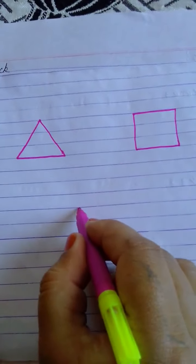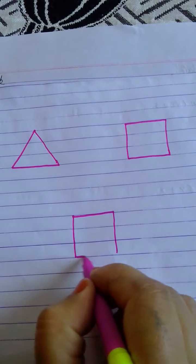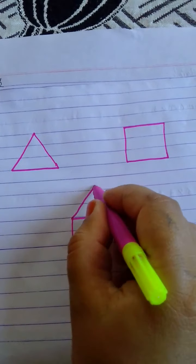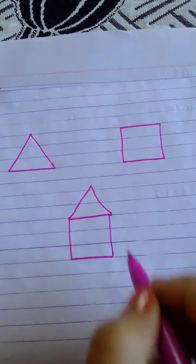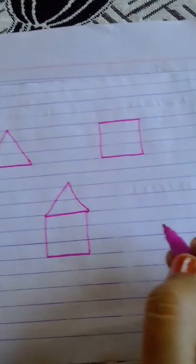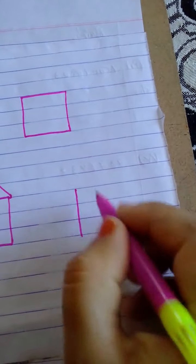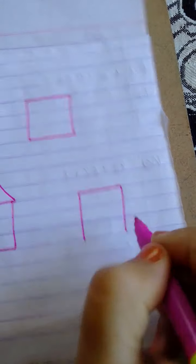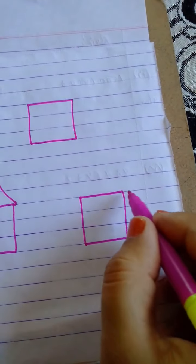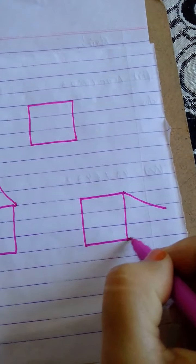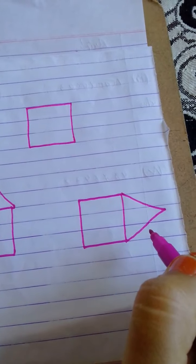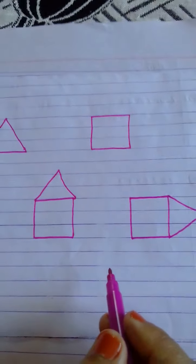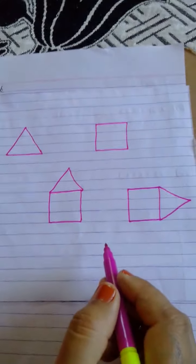One way is you can draw a square like this and on the top of it you can put this triangle. One more way is you have drawn this square here and you can join this triangle on the right hand side. So similarly you can form different patterns using different shapes.